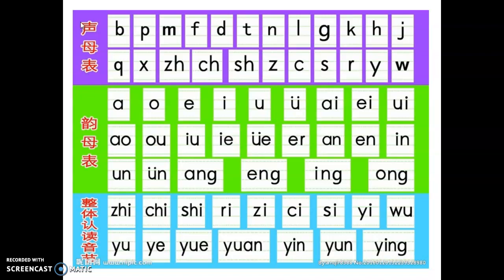声母表, the consonants, or initials. B, P, M, F, D, T, N, L, G, K, H.